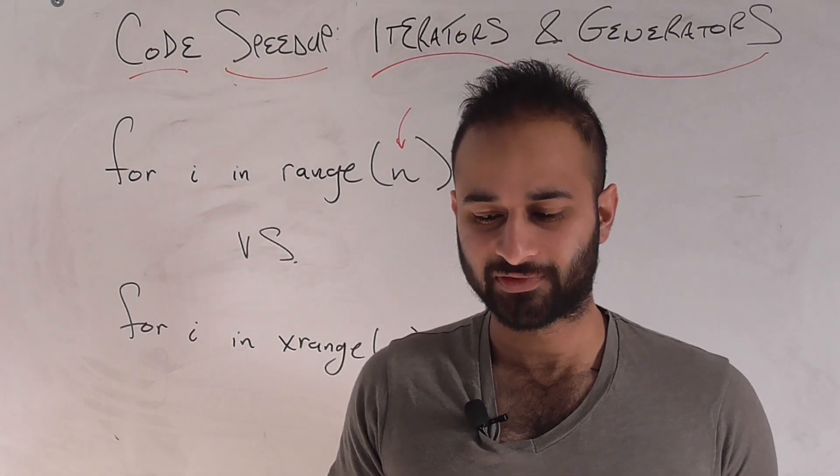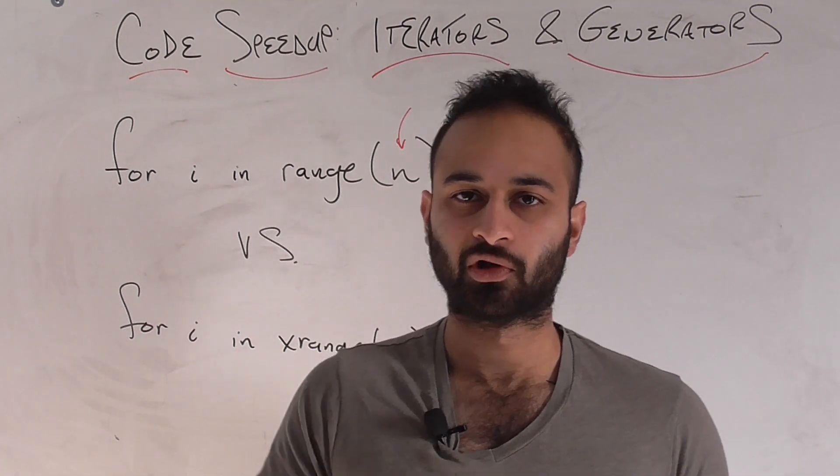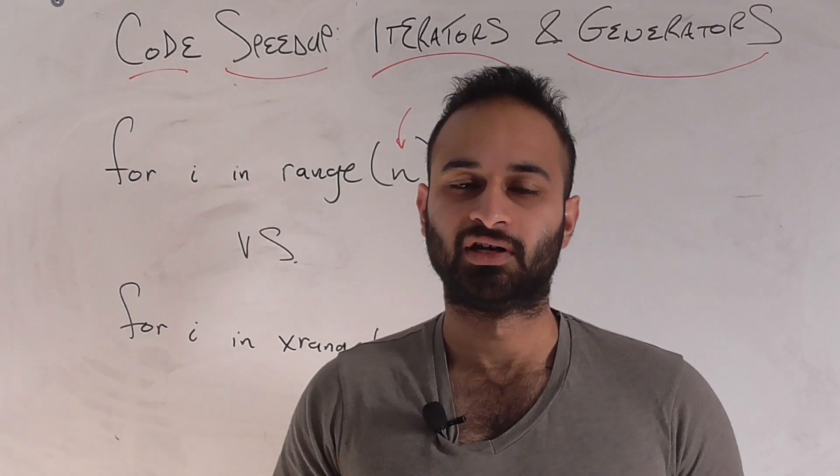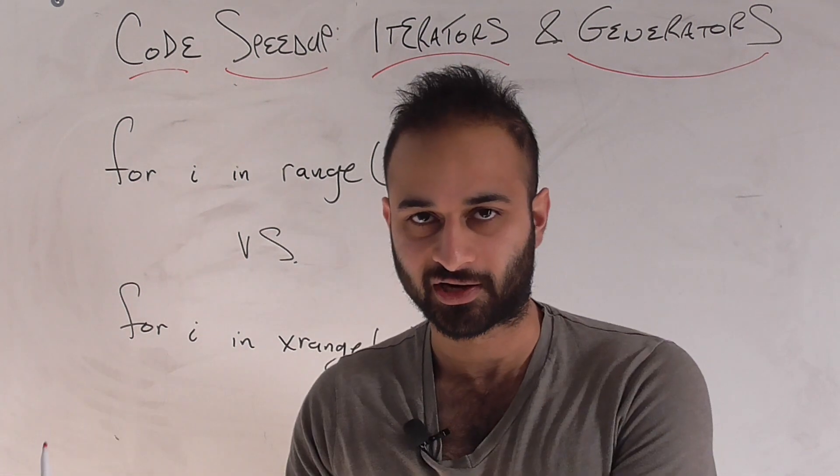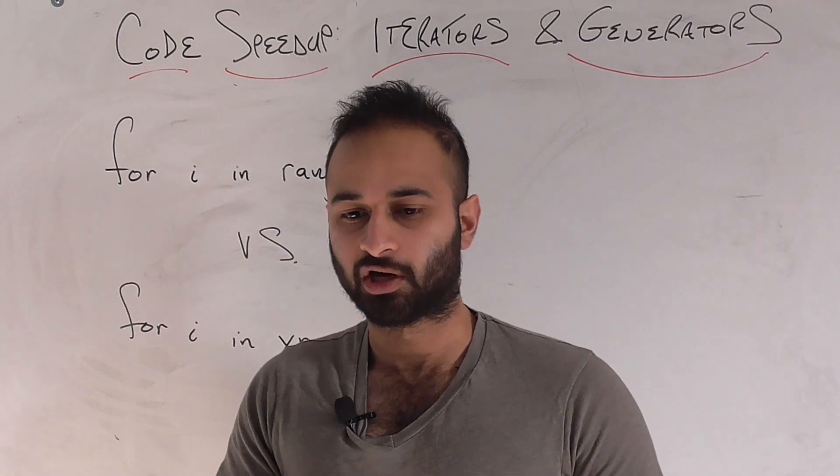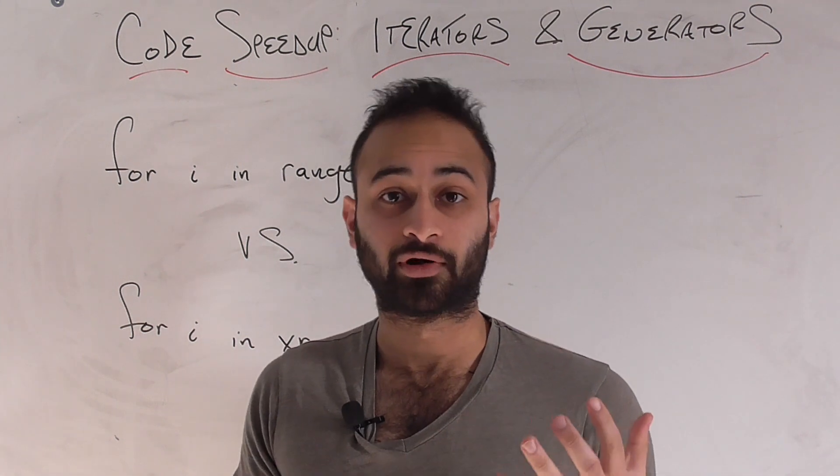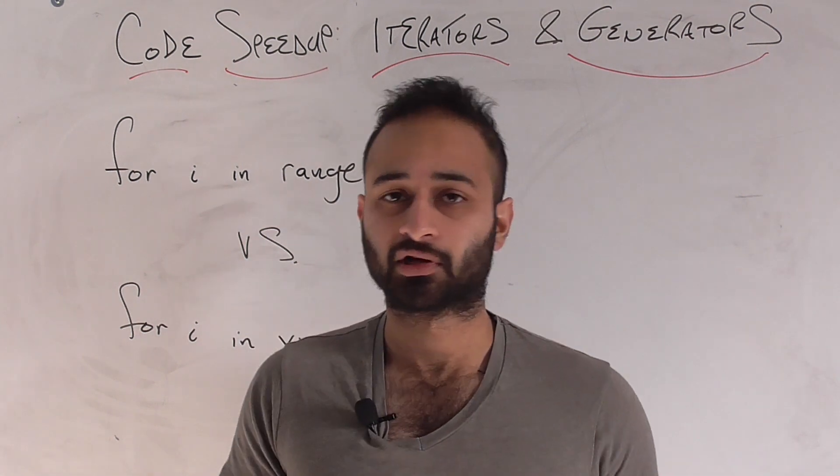Now, to just kind of explain these at a high level, because we'll look at the code, and we'll look at how fast these things are, and how they compare with different size lists, so we'll get to that in a second. But first, let's make sure we understand the concept between an iterator and a generator in computer science lingo.